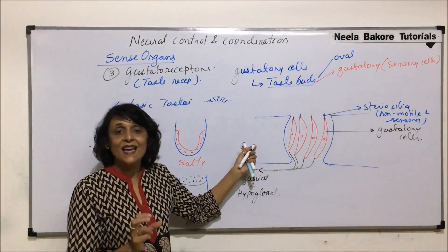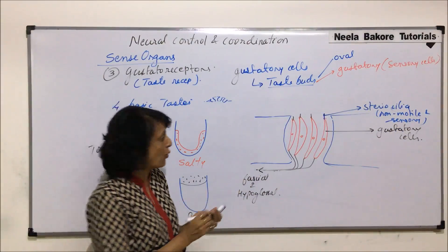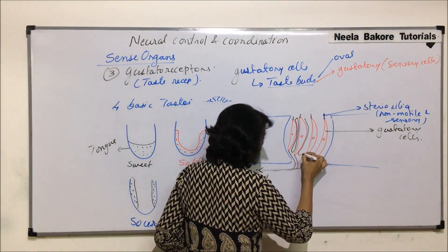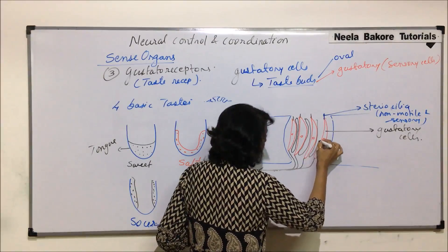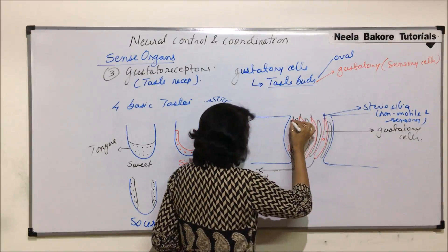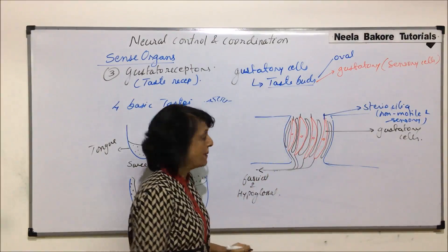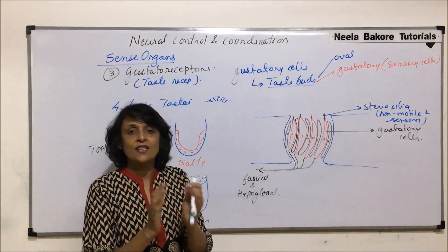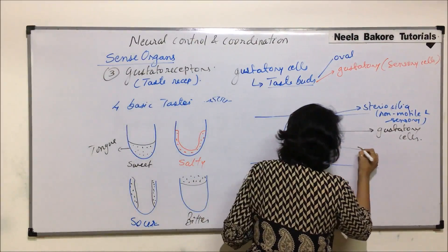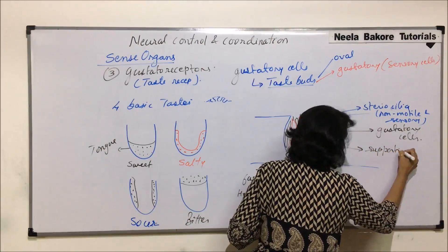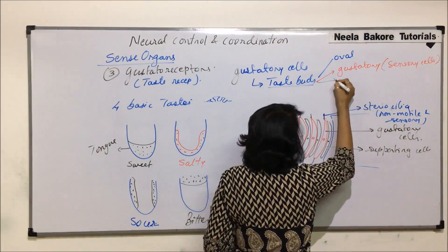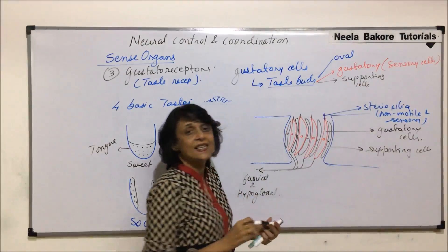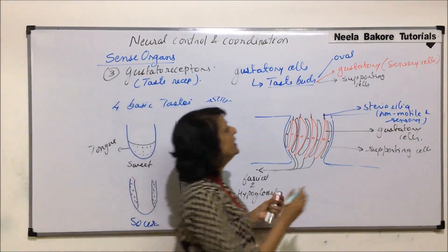In between the sensory cells are tall supporting cells. These do not have any stereocilia and no nerve fiber arises from them. They have nuclei but are non-sensory — their function is only to provide support to the sensory cells. The gustatory cells themselves are modified epithelial cells.